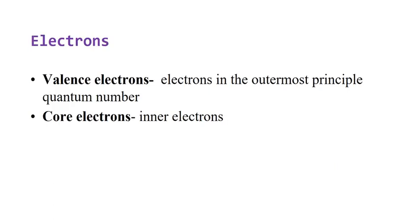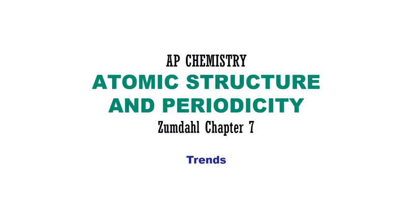Valence electrons are electrons in the outermost principal quantum number energy level of an atom. Core electrons are electrons inside that valence or outermost shell. That's the end of video number 2. Please stay tuned for video number 3: Trends, coming next.